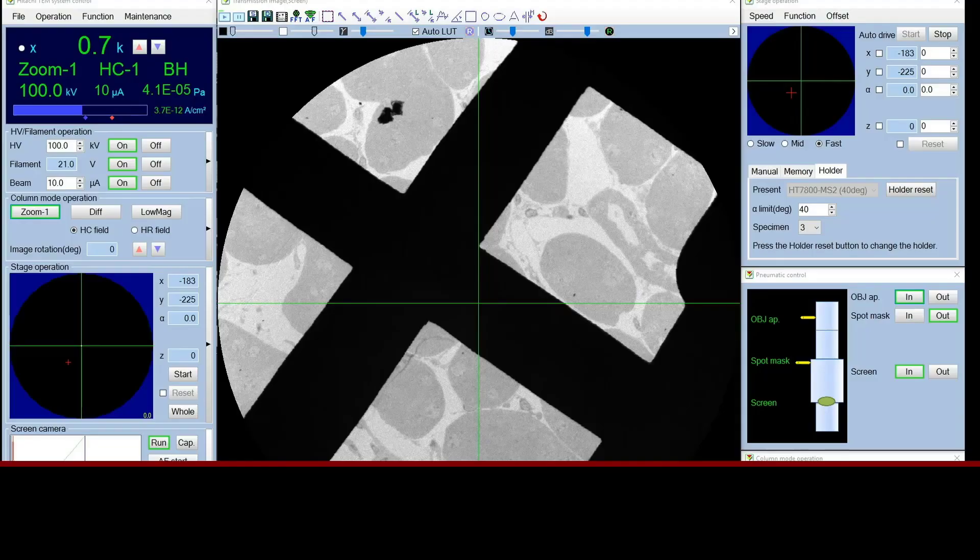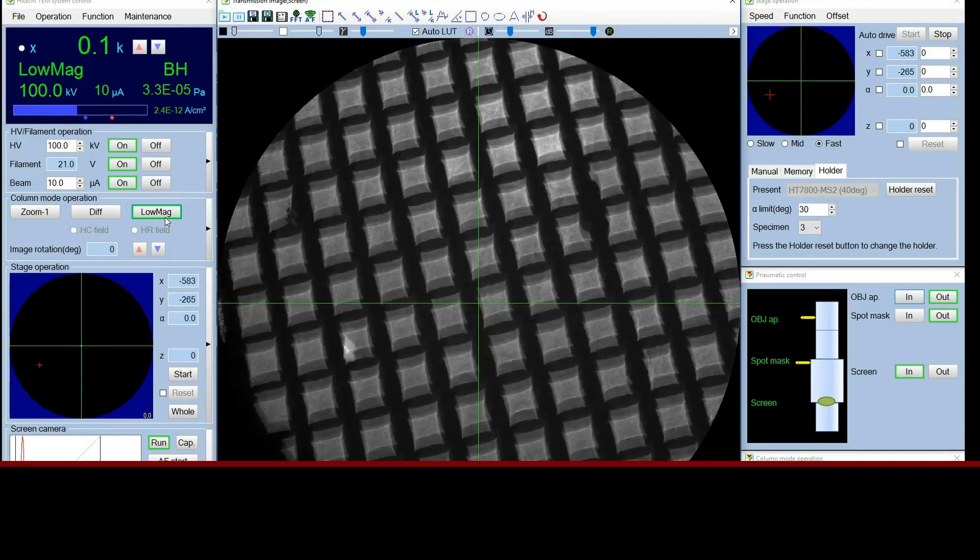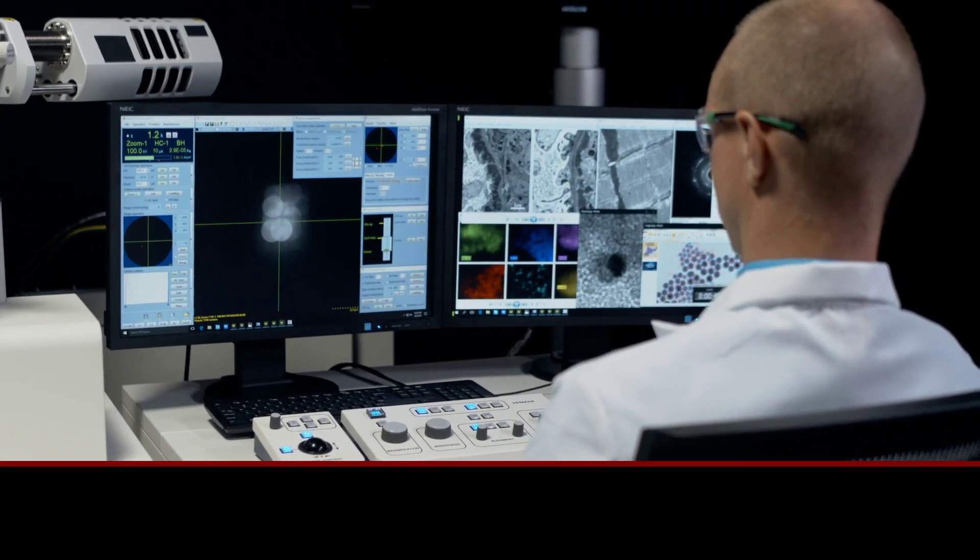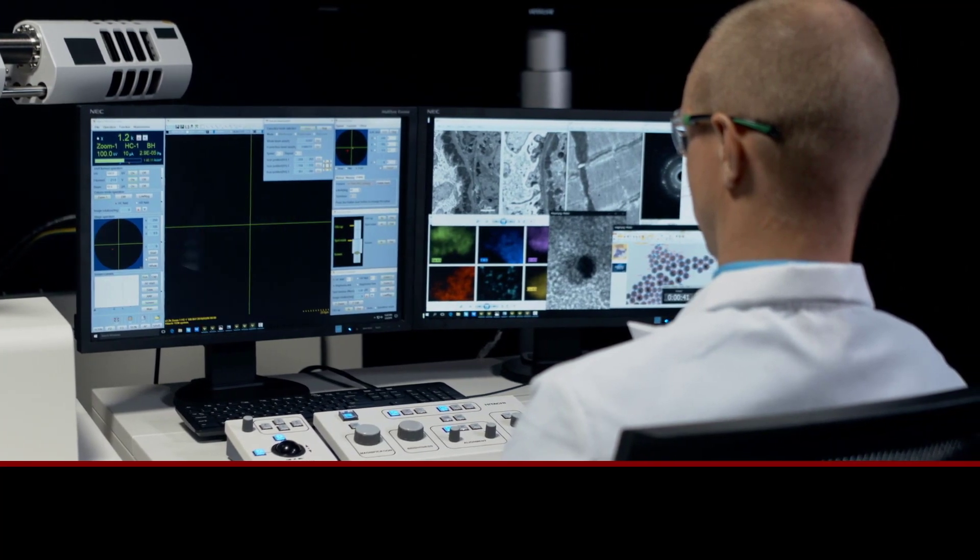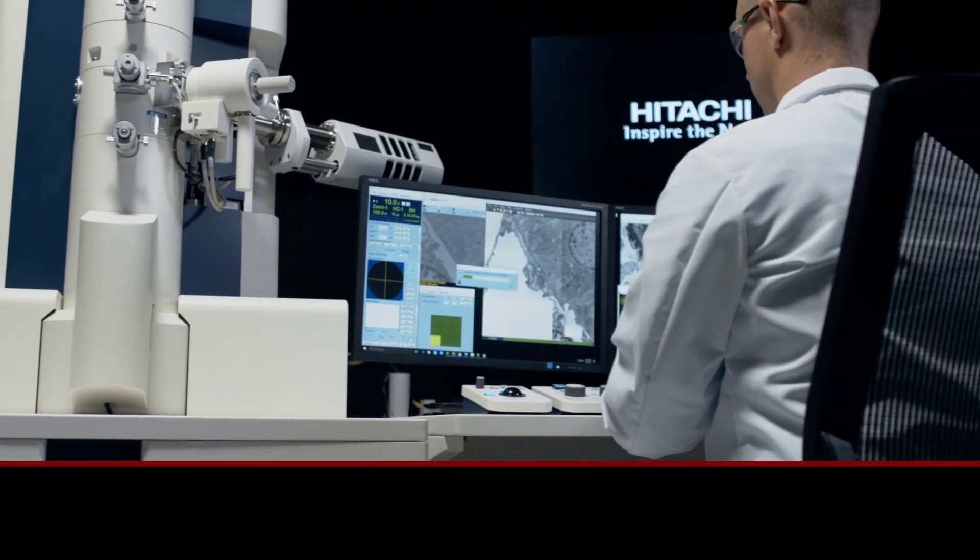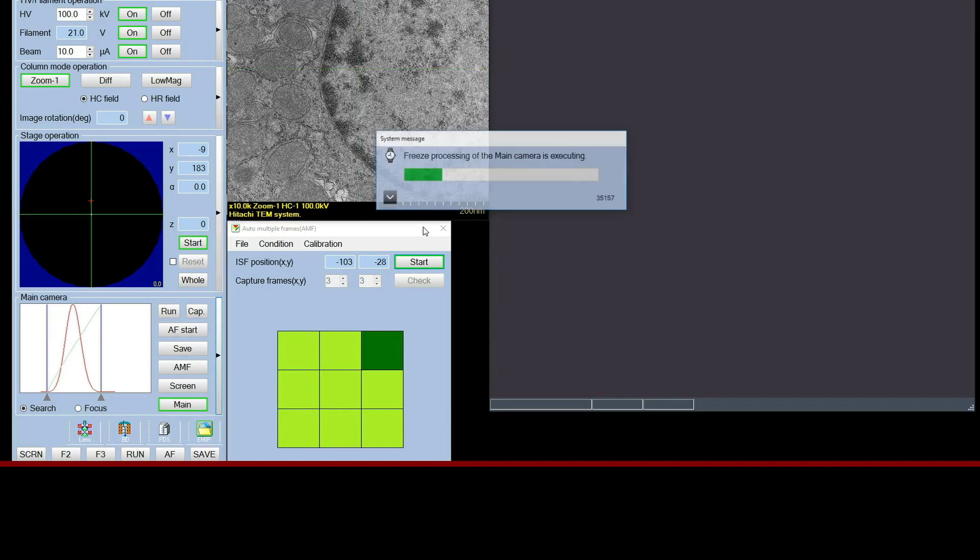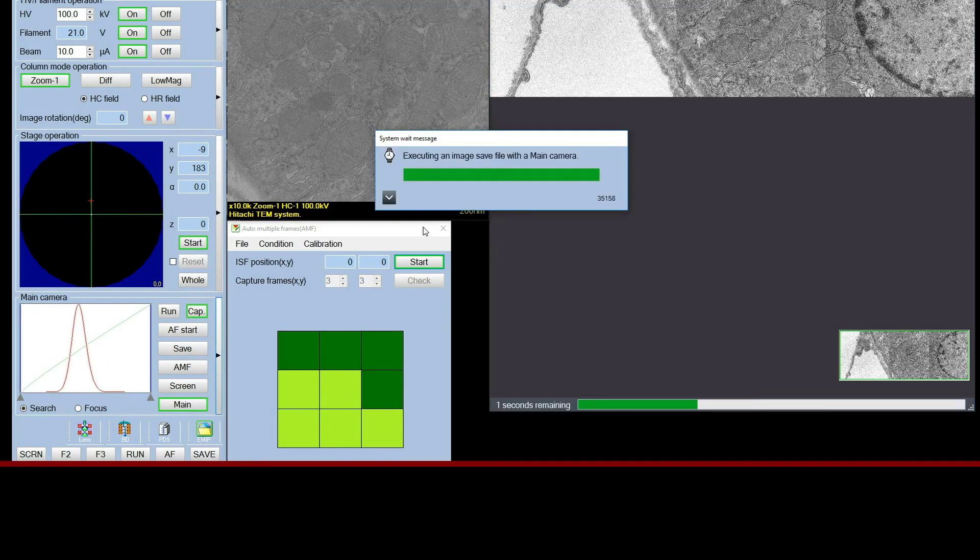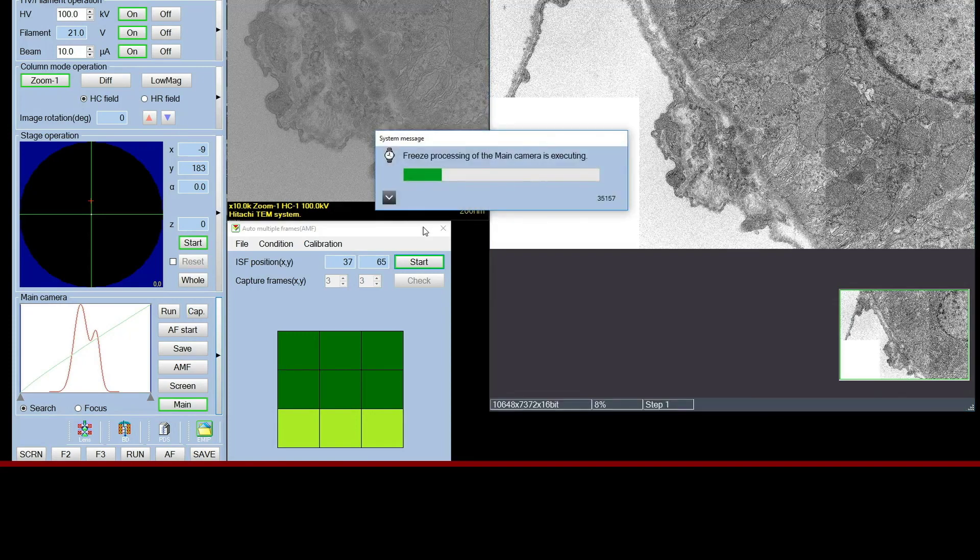An automated objective aperture provides seamless transition across magnification ranges. Utilizing Hitachi's cutting-edge technology and software, the HT7800 provides unrivaled ease of use and automation. Features including automated pre-radiation, auto-focus, automated montage, and whole grid-view navigation make imaging a breeze.